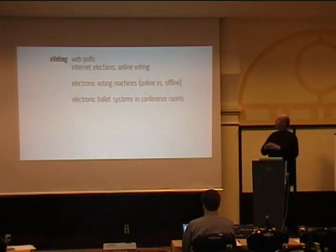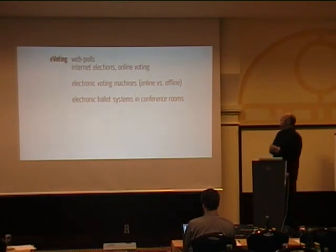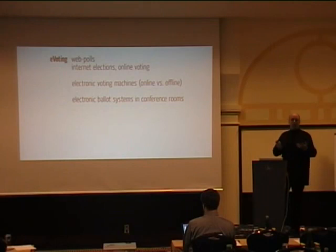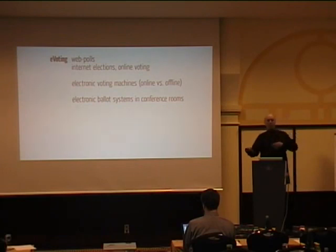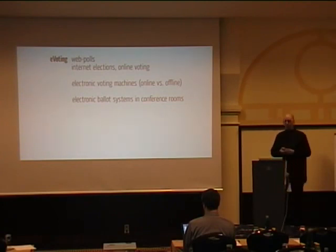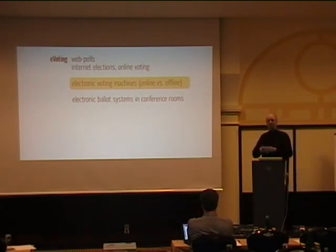There are a number of things associated with e-voting: web polls, internet elections, online voting. The people in Estonia do that — they're really brave. Especially in the light of the recent denial of service attacks that happened in Estonia, which puts that in a new light. Electronic voting machines — online and offline. Electronic ballot systems in rooms like parliaments where people press a button and it's collected automatically. I'm only going to talk about electronic voting machines, because this is the aspect most in the discussion at the moment.